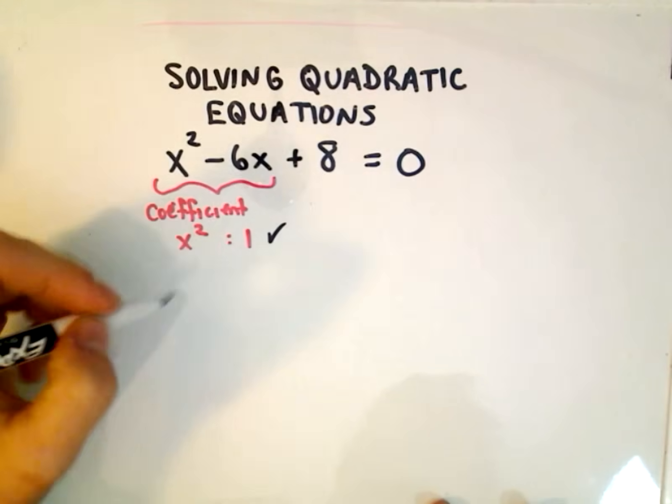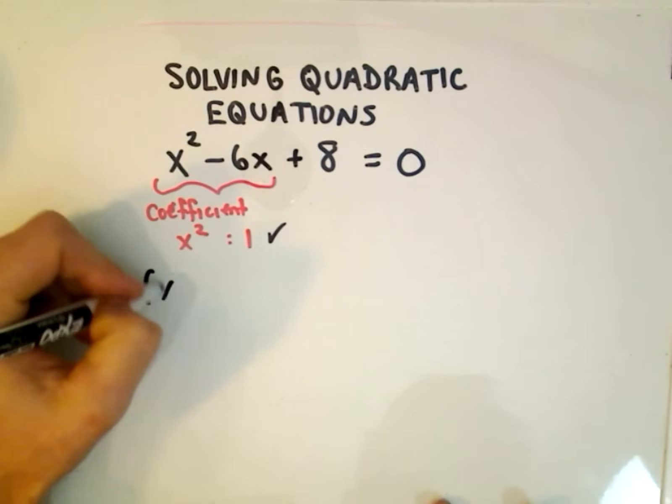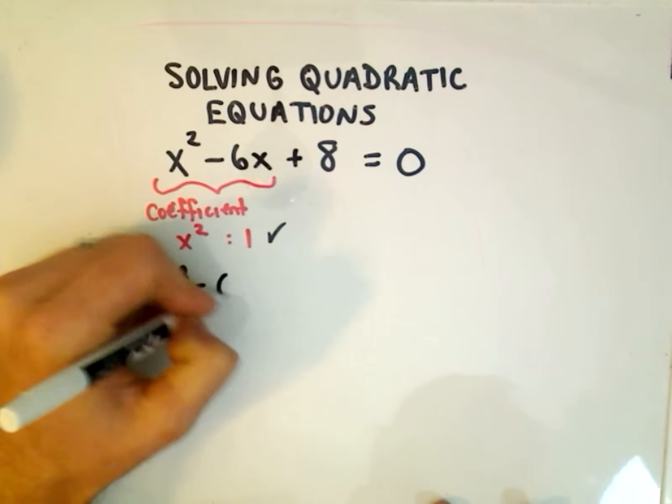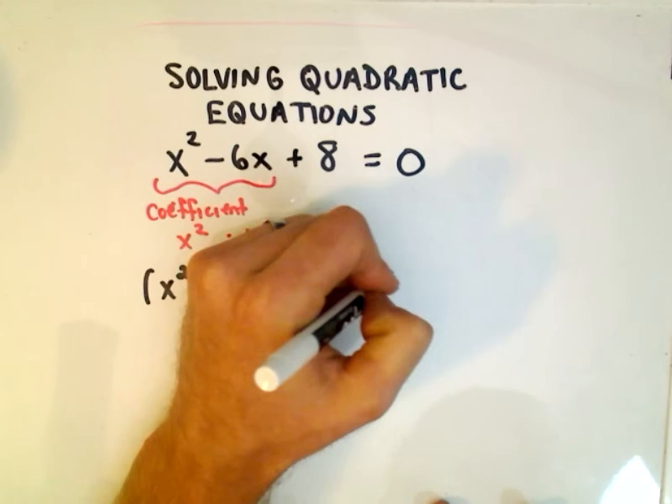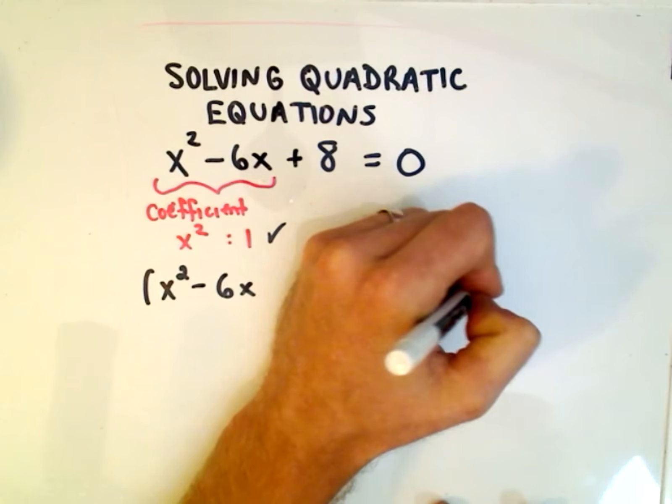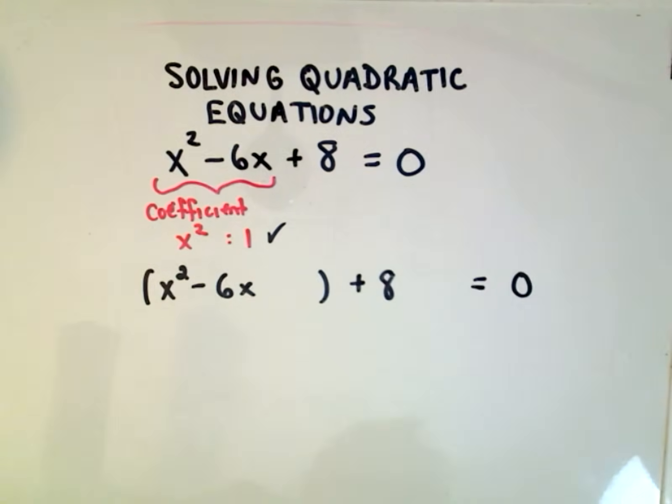So we have this condition. So what we then do is we just kind of stick that in a set of parentheses, the first two, give yourself a little space, and then I'm going to write my plus 8, give myself a little space, equals 0.